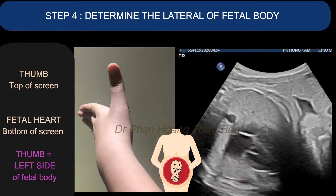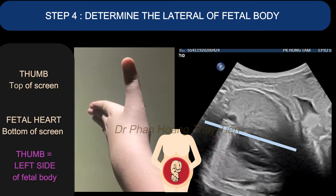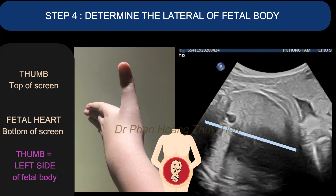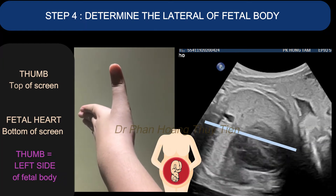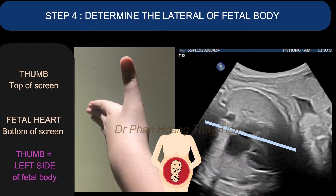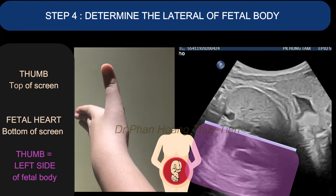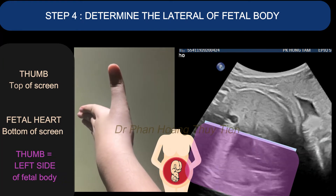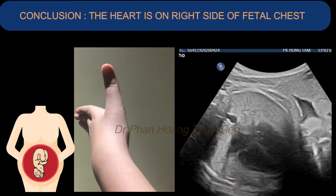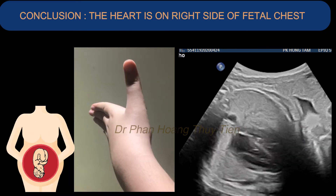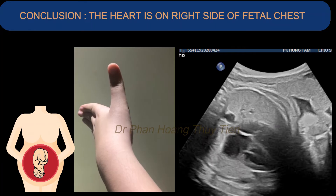Step 4. With the transverse view, you need to create a straight line from the spine that divides the fetal body into half, then apply the technique. You will notice the thumb and heart are positioned as listed below, which leads us to the conclusion that the fetal heart is on the right side of the fetal chest.